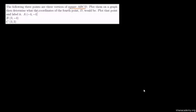Now let's do a slightly more involved problem. It says: the following three points are three vertices of square ABCD — plot them on a graph, then determine what the coordinates of the fourth point D would be. Let's plot these on a graph as they tell us to do.